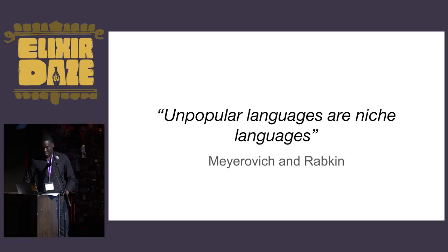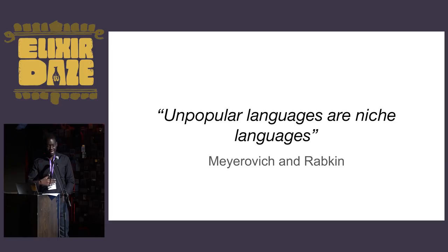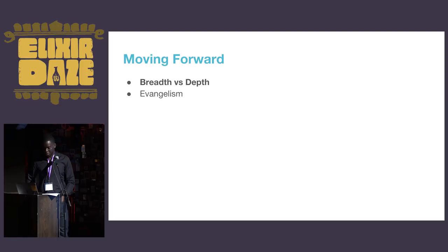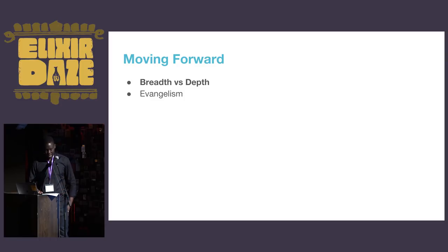There's this quote from Meyerovich and Rabkin, who perform a large analysis of GitHub and SourceForge. They make this statement: unpopular languages are niche languages — and by definition, niche languages are unpopular languages. For us, breadth versus depth is an important context to think about. When moving forward as a programming language and community, we have to make a choice: do we go deeper into functional programming and implement monads, or do we become more encompassing and wider?